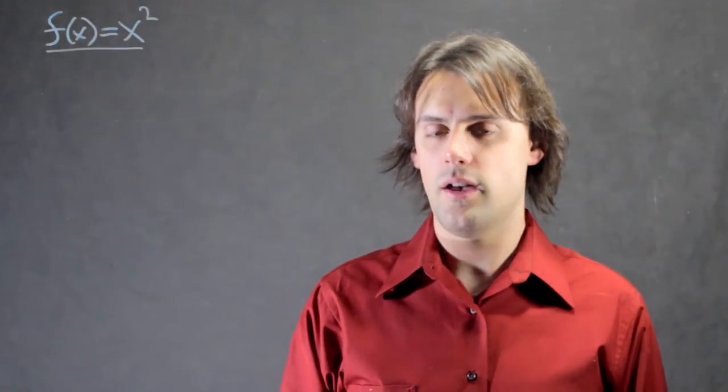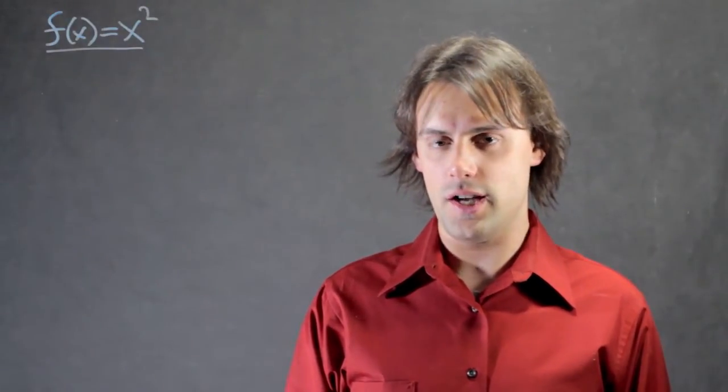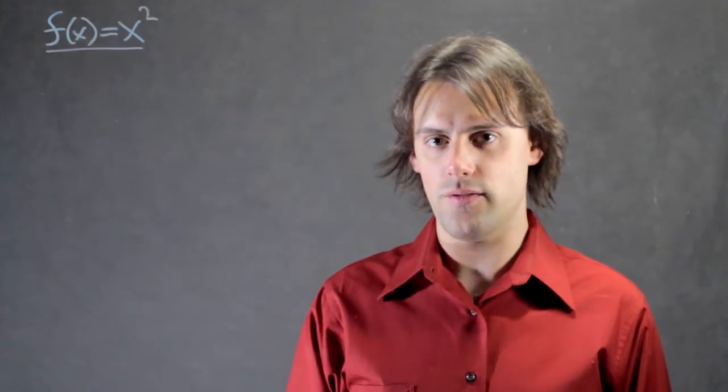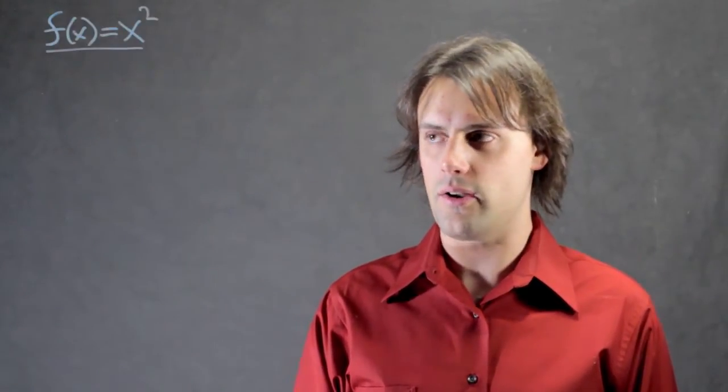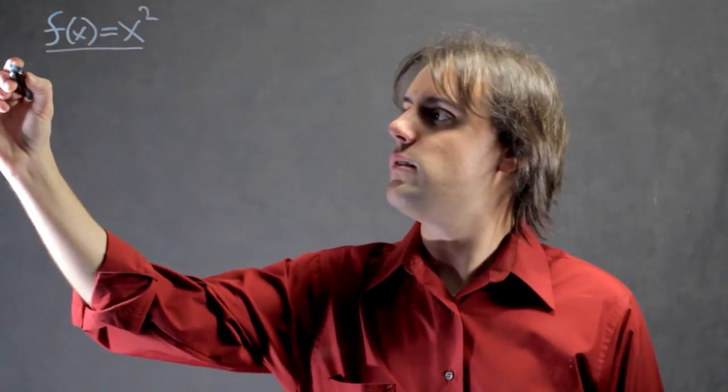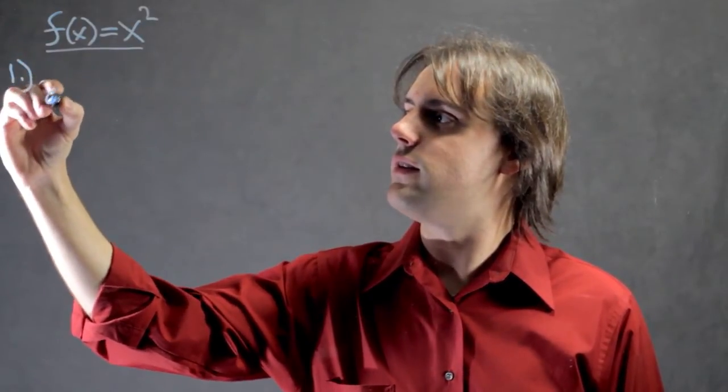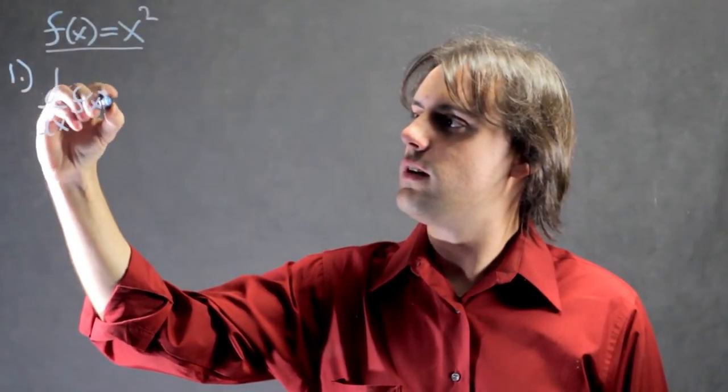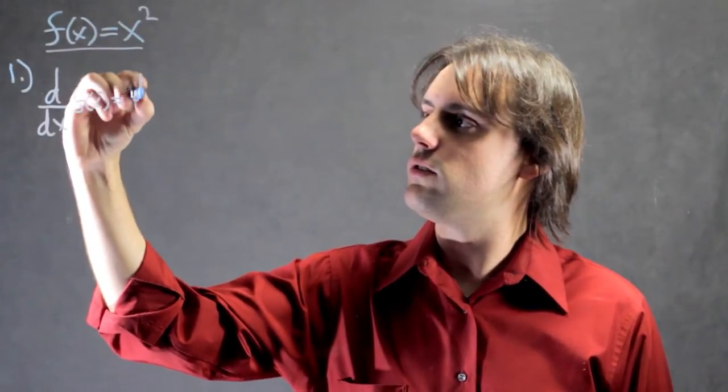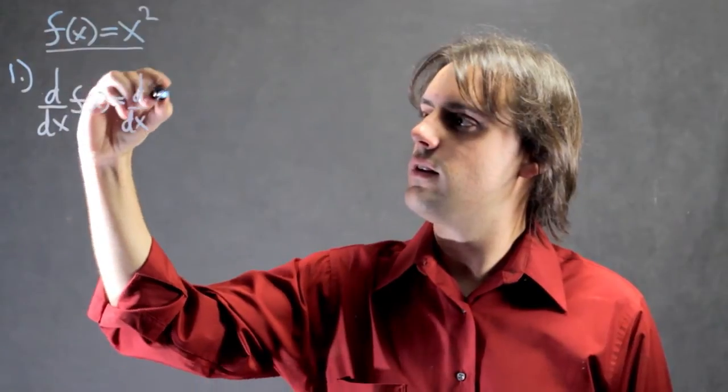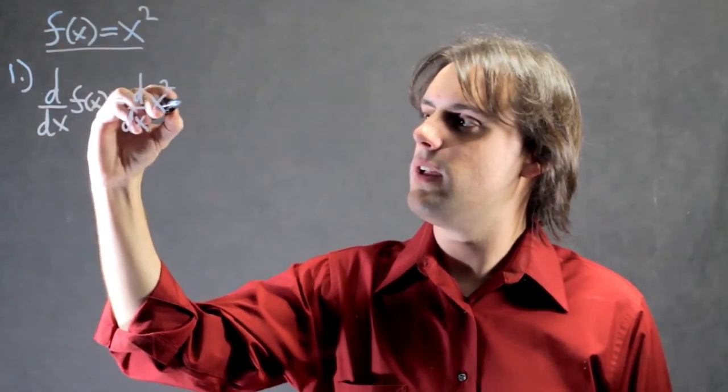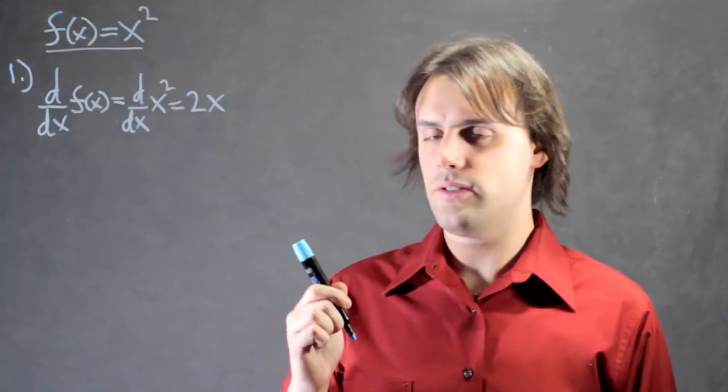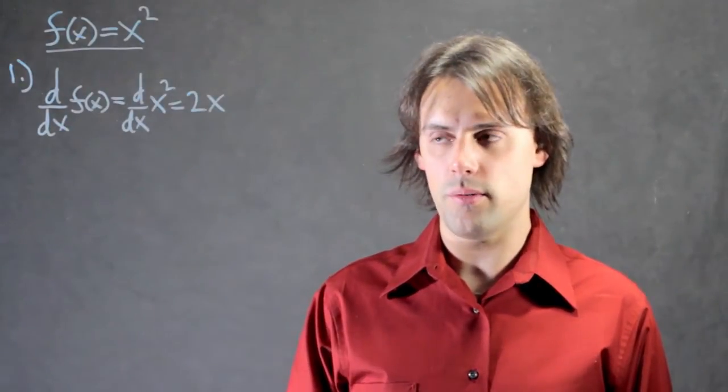One involves differentiation, so this would be taking the derivative of our function of x with respect to the variable x. So we would have d dx of f of x equal to d dx of x squared, and this is simply 2x. So this is what one type of calculus problem might look like.